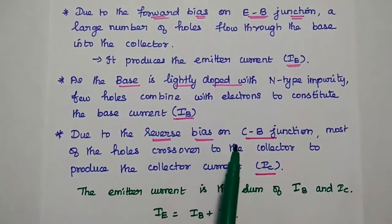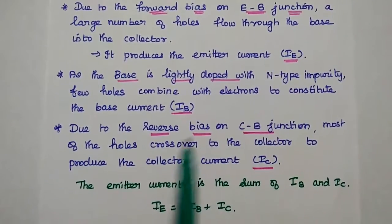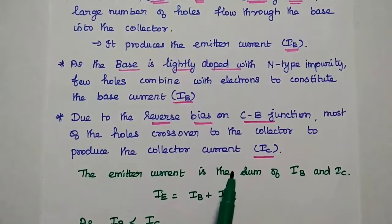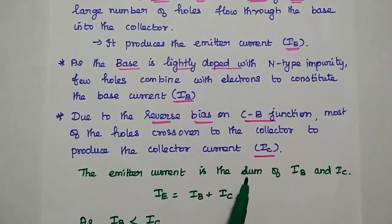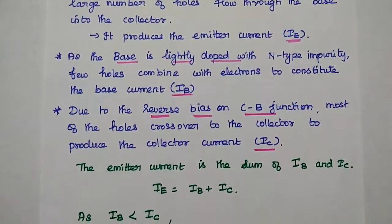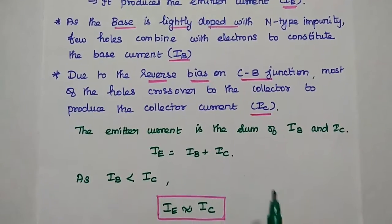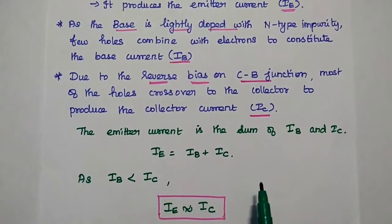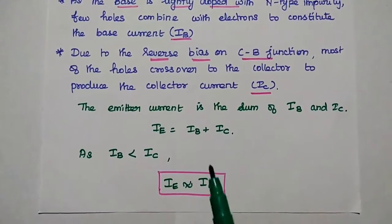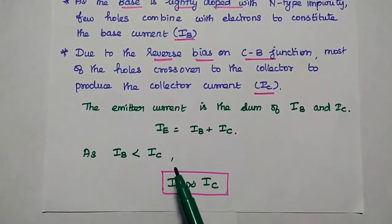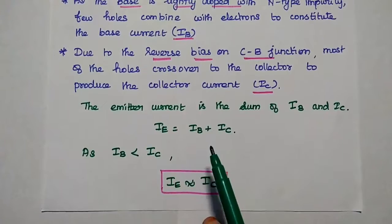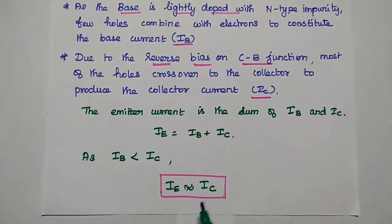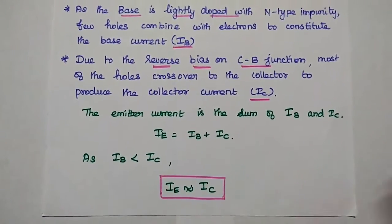Due to the reverse bias on the collector-base junction, most of the holes cross over to the collector to produce the collector current. According to Kirchhoff's current law, the emitter current is equal to the sum of base current IB and collector current. Since the base current is far less than collector current, we can say the output current is directly proportional to the input current.